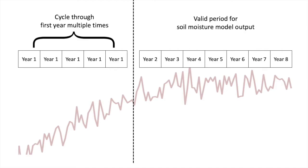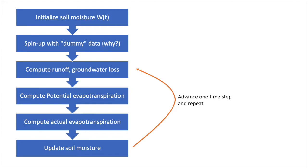Compute the runoff, groundwater loss, compute potential evapotranspiration, compute actual evapotranspiration, and then update your soil moisture state variable, W(t), and then move on to the next time step, move on to the next month, and do it again.